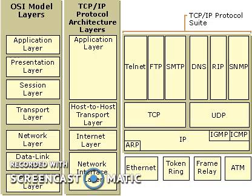That's why a TCP/IP reference model has been developed — the model around which the internet is developed. It has four layers and is a protocol dependent standard. TCP/IP means Transmission Control Protocol and Internet Protocol. It is the network model used in the current internet architecture. Protocols are a set of rules which govern communication over a network.